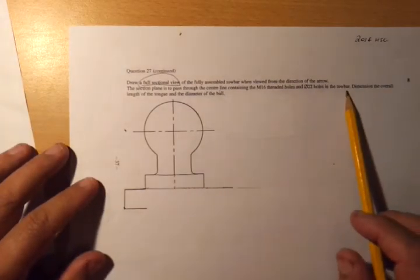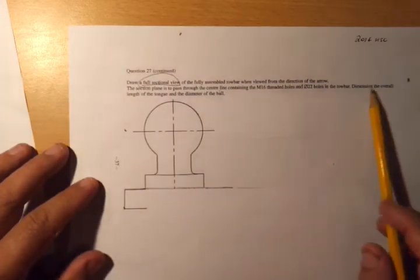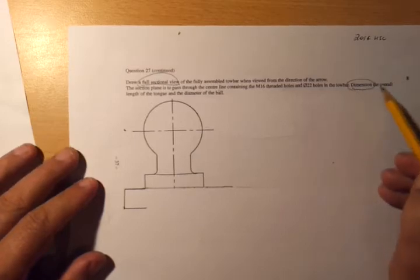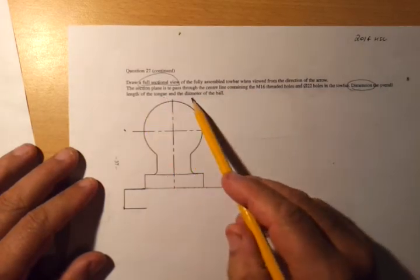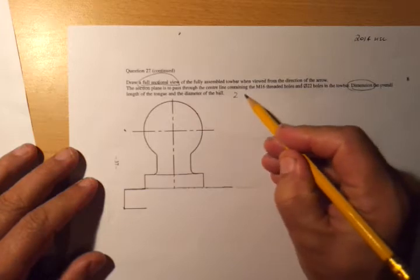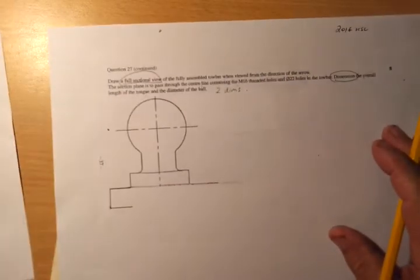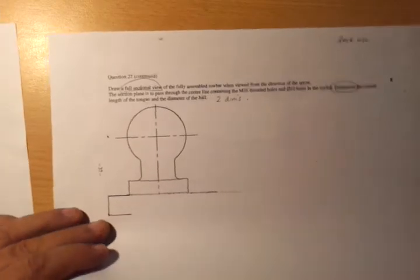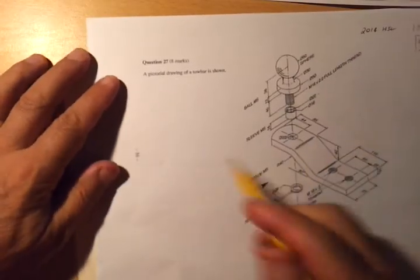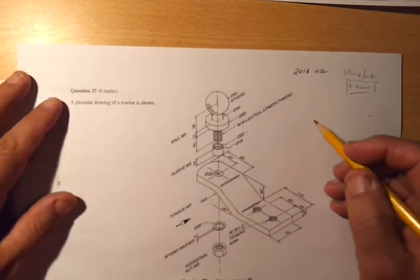Now, dimension. So significantly, dimension the overall length of the tongue and the diameter of the ball. So there are only going to be two dimensions over here. Well, I'd suggest a way of proceeding with this would be to get a rough idea of what this thing is going to look like. So there it is, and we can even draw it on here.